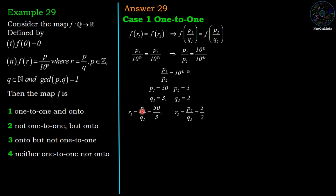So r1 = p1/q1 = 50/3 and r2 = p2/q2 = 5/2. Therefore r is in the form p/q with gcd(p,q) = 1.